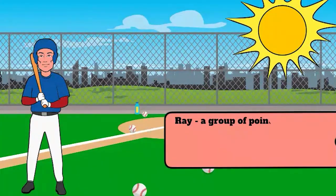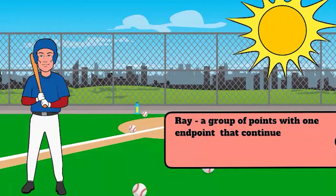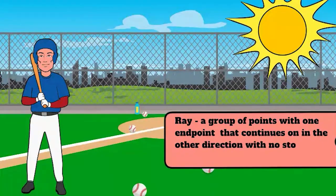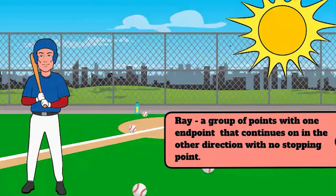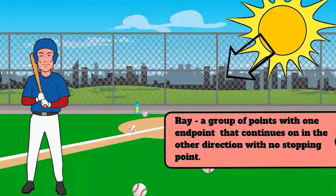Rays are a group of points with one endpoint that continues on in the other direction with no stopping point. Look at the ray of sunshine. The sun is the endpoint and the light path forms the rest of the ray. A ray has one endpoint and extends in the other direction forever.